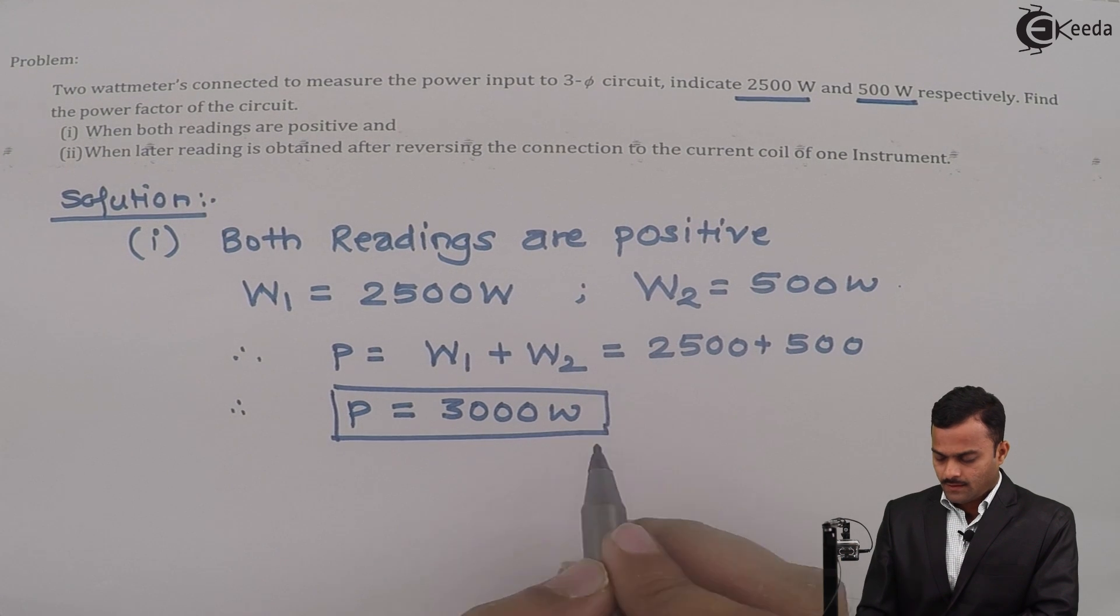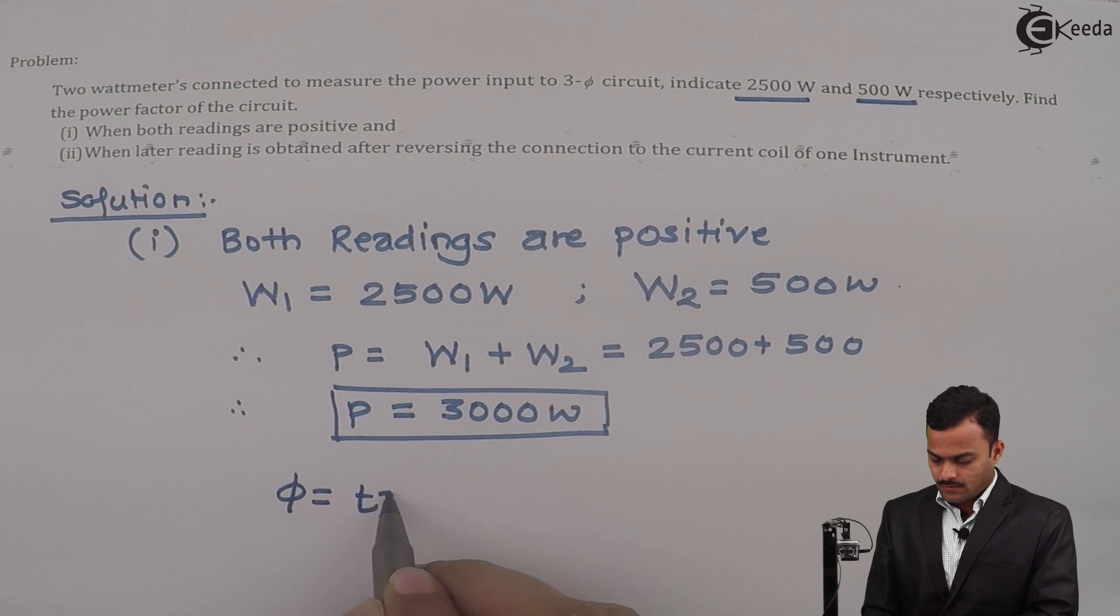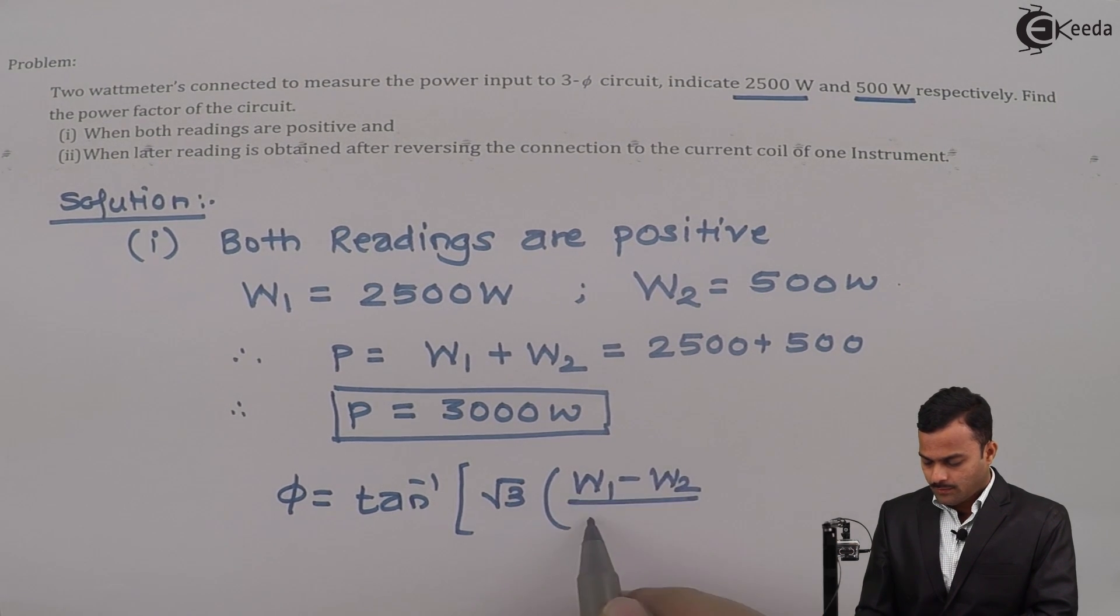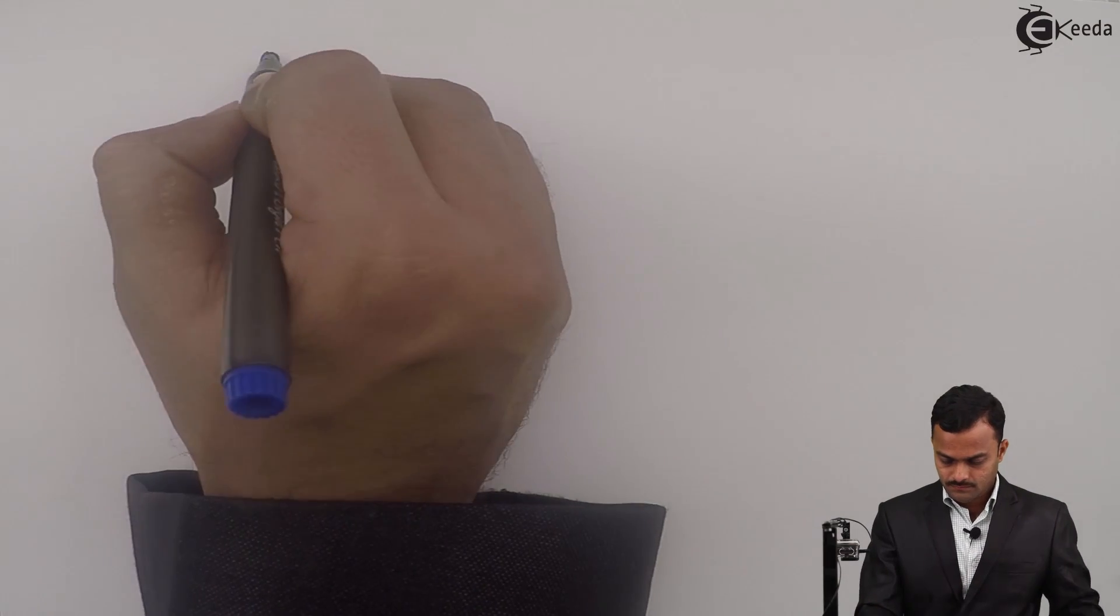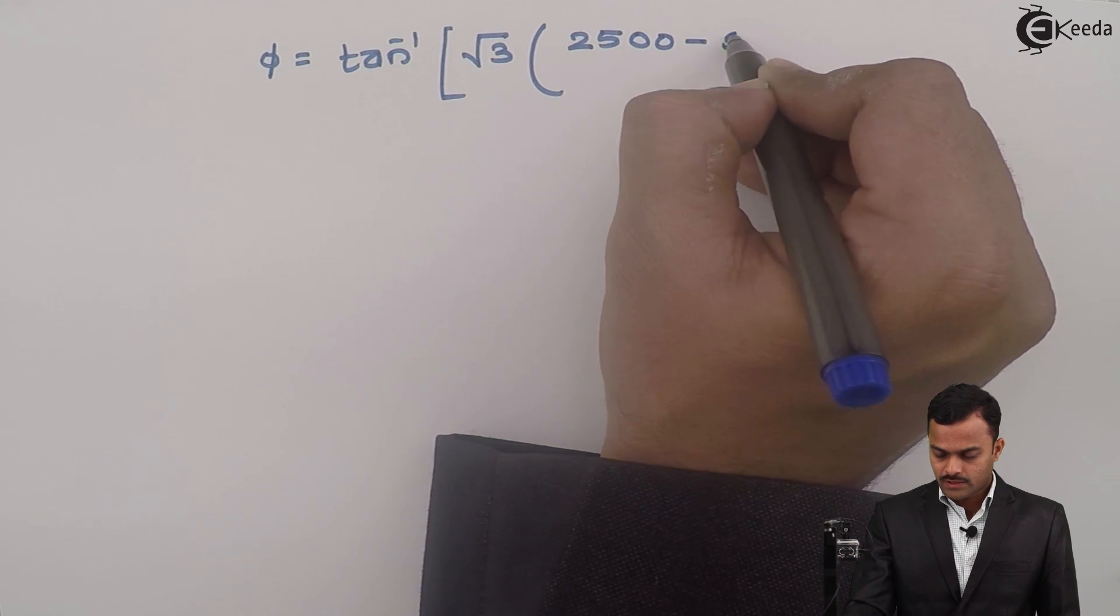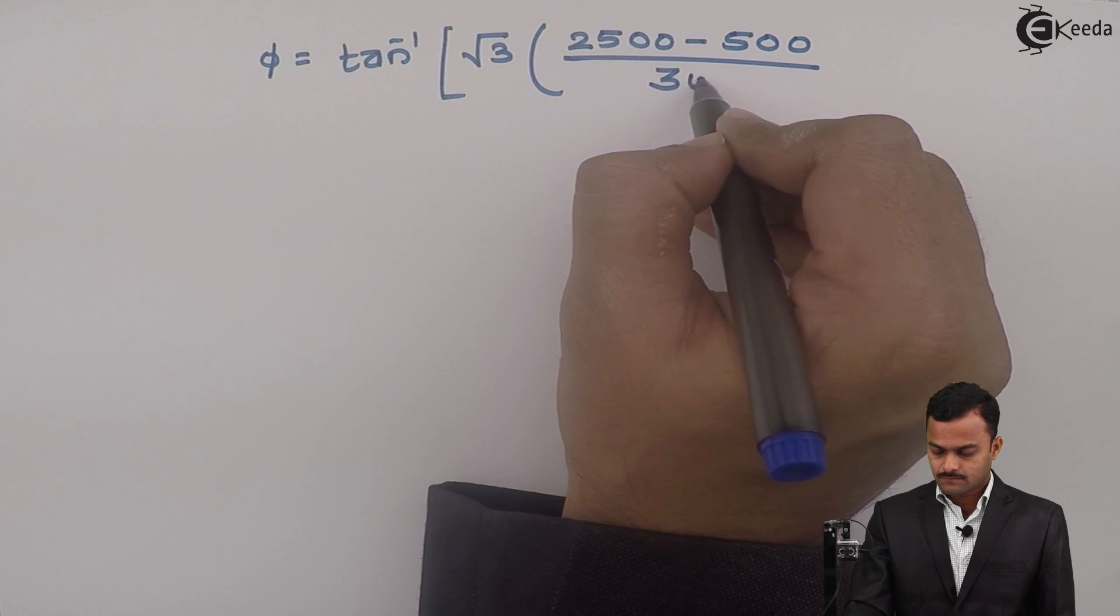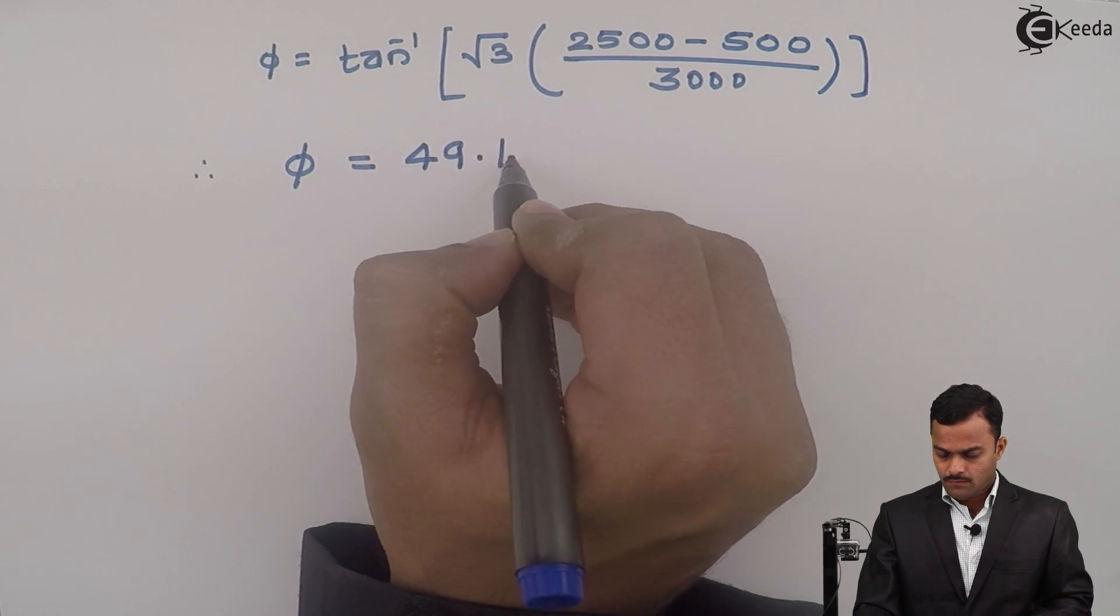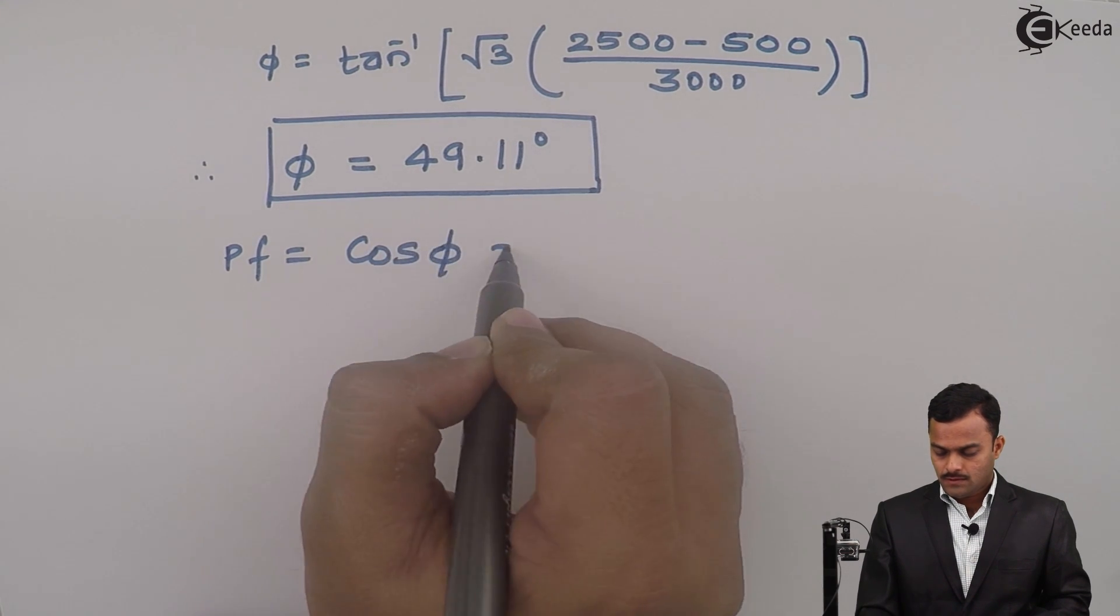Now to get the power factor, we should know the power factor angle, and the formula for power factor angle is tan inverse of root 3 times (W1 minus W2) upon (W1 plus W2). So let's substitute the values. φ equals tan inverse root 3 times (2500 minus 500) upon 3000. If you solve, you will get power factor angle φ equal to 49.11 degrees, and power factor equal to cos φ, nothing but cosine of 49.11.